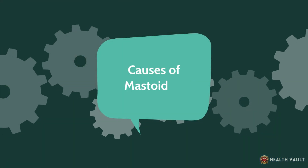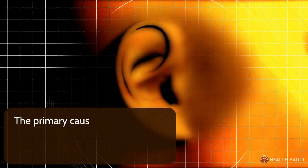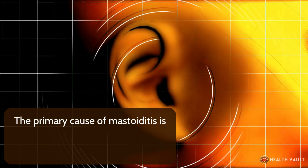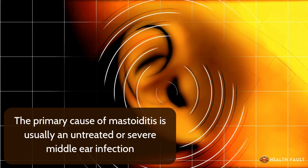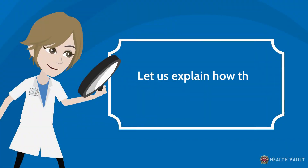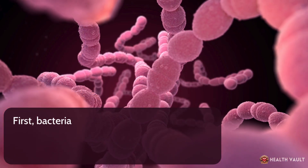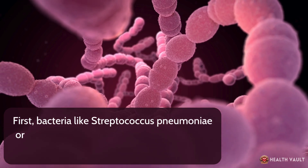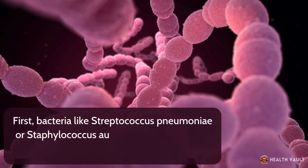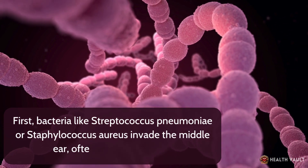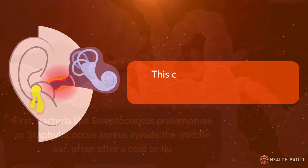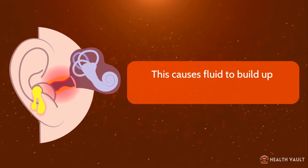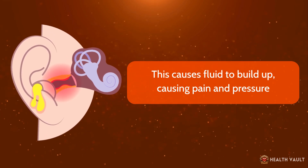The primary cause of mastoiditis is usually an untreated or severe middle ear infection. First, bacteria like Streptococcus pneumoniae or Staphylococcus aureus invade the middle ear, often after a cold or flu. This causes fluid to build up, causing pain and pressure.